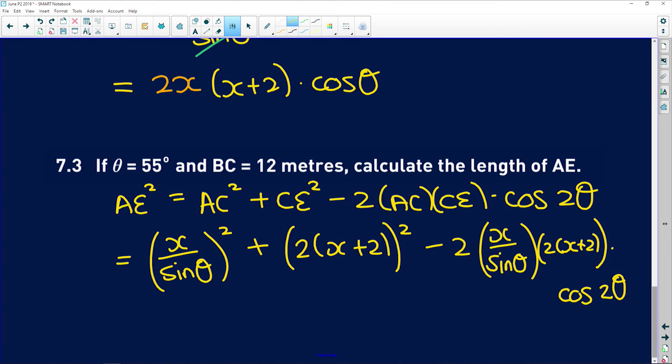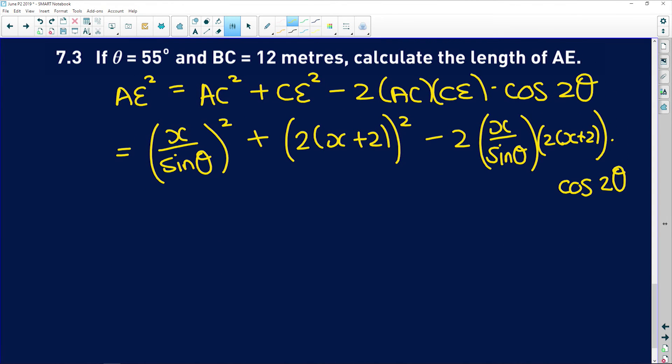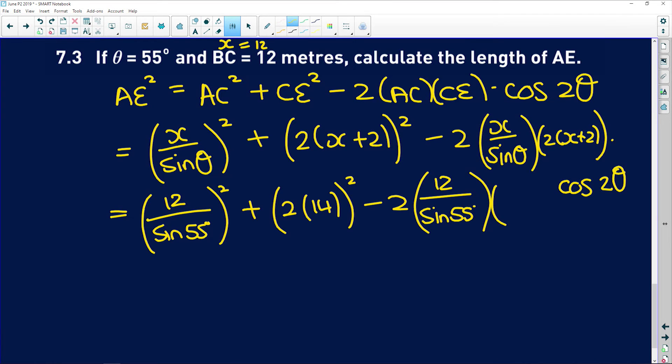Okay, so now we've got the variables. They've been given to us, so we substitute them. And remember that x is 12 because BC is x, so we can say 12 over sine of θ, was 55 degrees, all squared, plus—minus 2 times x is 12 over sine of θ, was 12, so 12 plus 2 is 14, and that is squared, minus 2 times x is 12 over sine of 55, multiplied by—we found over here that 2 into x plus 2 is 2 into 14, so that's the same thing here. So it's 2 multiplied by—cos of 2 multiplied by cos of 2 times 55 is 110 degrees.